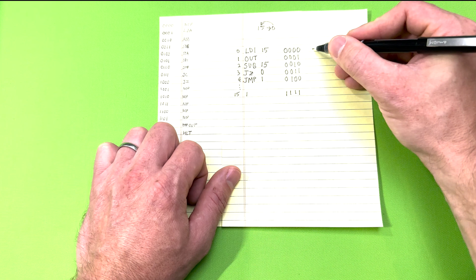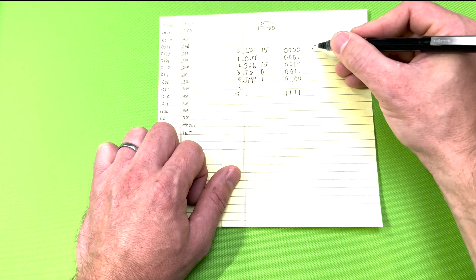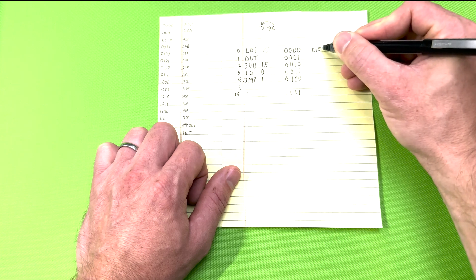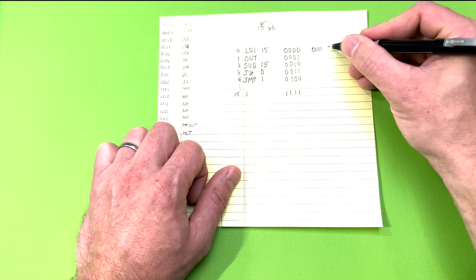If we look back at our instruction set, we can see that the bits for LDI instruction are 0, 1, 0, 1. So the first 4 bits will be 0, 1, 0, 1. The next 4 bits will be the value, which in this case is 15. 15 in binary is 4 ones.